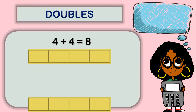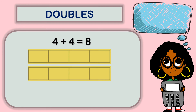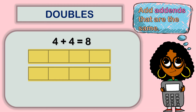Now let's look at this picture here. Four plus four equals eight. Here I have four cubes at the top and then four more cubes at the bottom. Four and four are the same. With doubles, we are adding the same numbers. The numbers that we are adding are called addends.